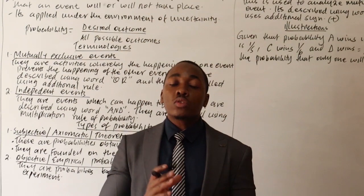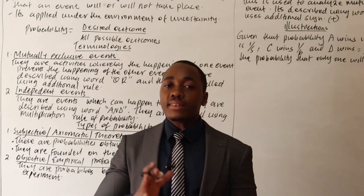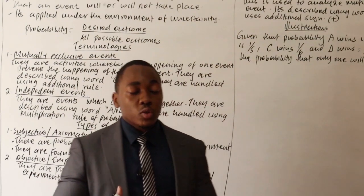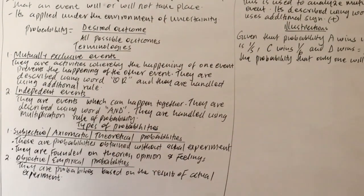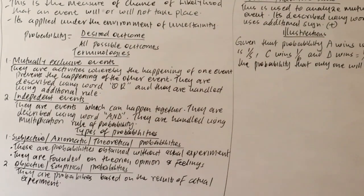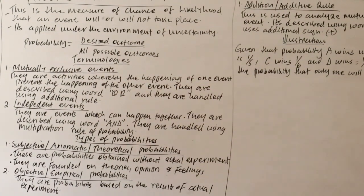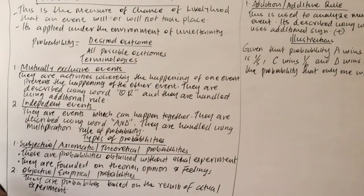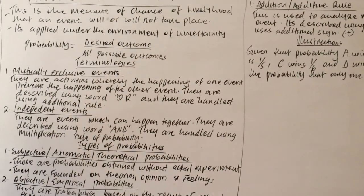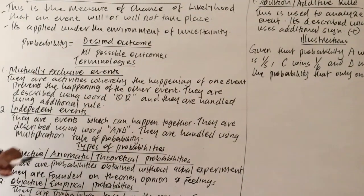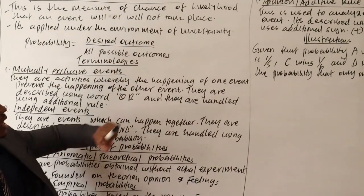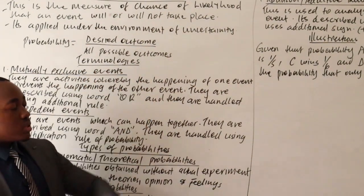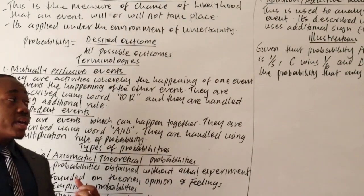Under probability, how do you compute probability? This is the general formula: probability equals desired outcome divided by all possible outcomes. That's how you get the probability.